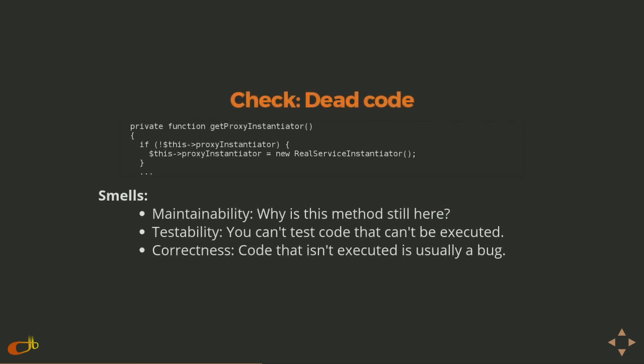Dead code — we looked at this with GoToFail, where there's a section of code that gets executed and then, just like GoToFail, code afterward that never gets executed. The question becomes: why is this code here? Was it a bug? Did the author intend to use it? Was it a refactoring artifact? And from a correctness standpoint, if that code isn't getting executed, you're wasting lines of code that people are going to be reading.